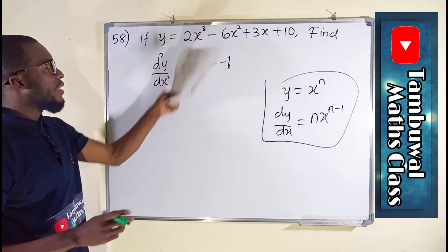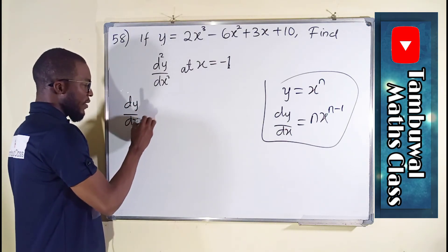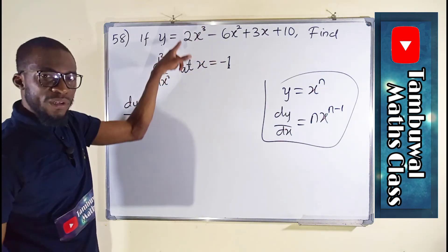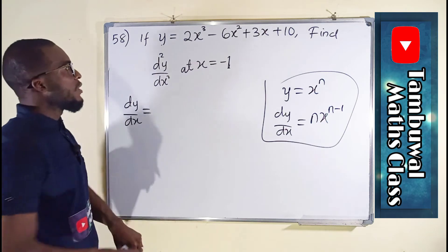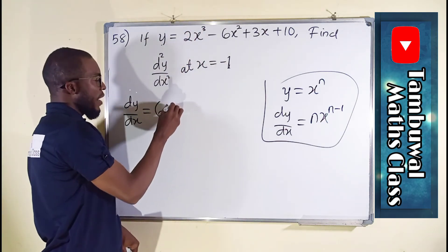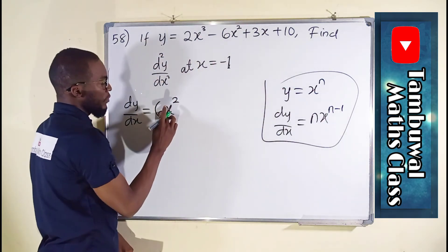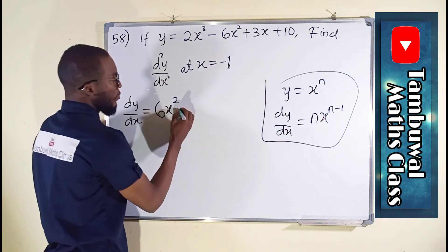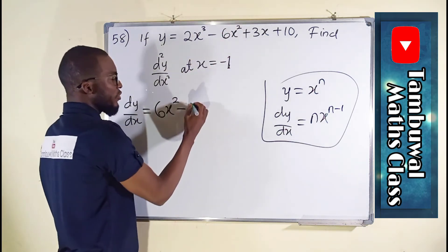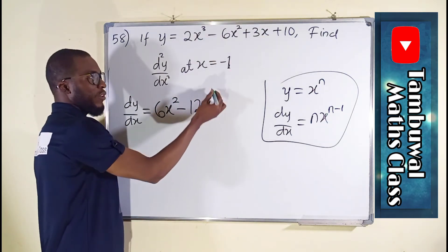We are going to apply the same thing here. dy over dx equals: n here is 3, it will drop down as a multiplier but already we have 2 there, so it will be 3 times 2, which is 6x, then 3 minus 1 gives us power 2. Minus: already we have 6 here, if this 2 multiplied down it becomes 12x, and 2 minus 1 is 1, and we don't have to write the 1 as the power here.